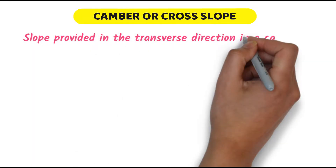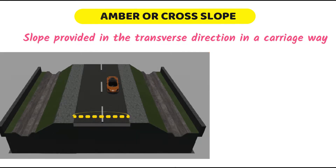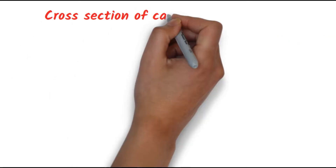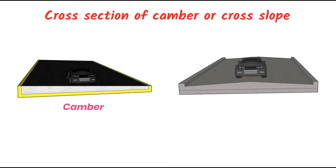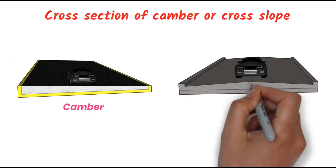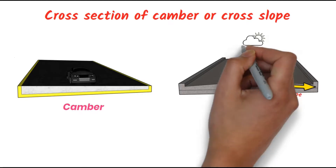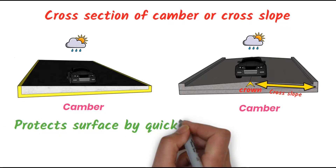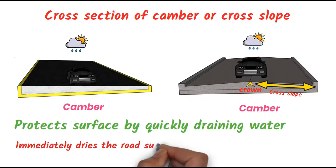The next important component of a road is camber or cross slope. This is the slope provided in the transverse direction in a carriageway, and it helps to drain water from the carriageway. The camber may slope towards one side or both sides. The center portion of the camber is called the crown. When water falls over the road, it is drained on both sides or one side. It protects the surface by quickly draining water, allowing the surface to dry off and protecting vehicular safety.